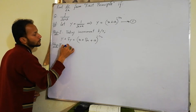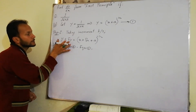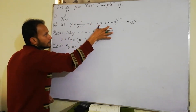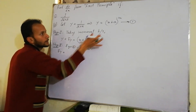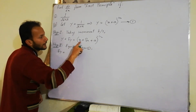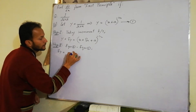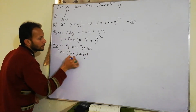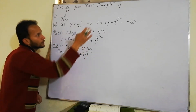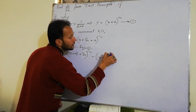Step 2: equation 2 minus equation 1. Dono equations ko subtract karenge - left hand side se left hand side aur right hand side se right hand side. y cancel ho jaayega, toh left side mein sirf Δy bachega. Right side mein: (x + Δx + a)^(-1/2) minus (x + a)^(-1/2).